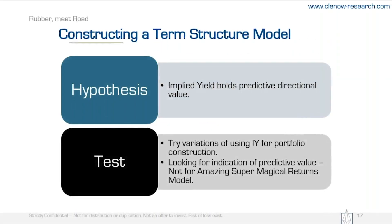Let's construct the first trading model. I will show you a couple of different ways we could trade this phenomenon. The hypothesis we're testing with these trading models is whether or not there is a predictive directional value in the implied yield.